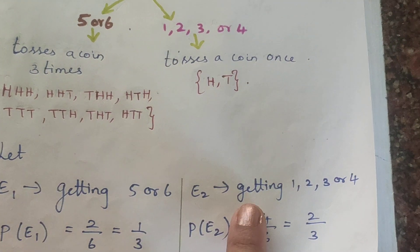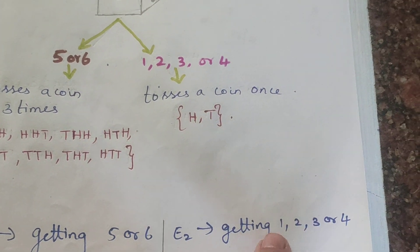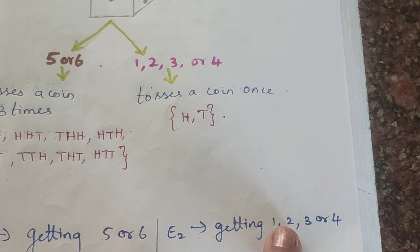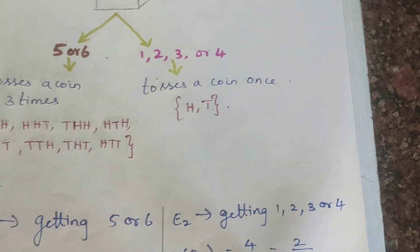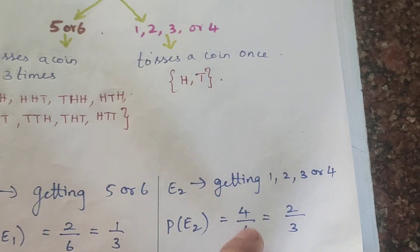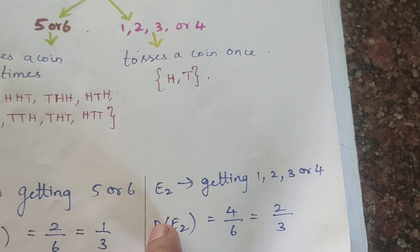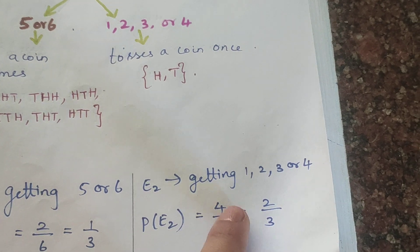E2 is getting 1, 2, 3, or 4. We have 4 chances out of 6 total. So probability of E2 is 4 by 6, which reduces to 2 by 3.